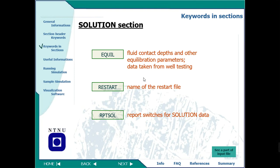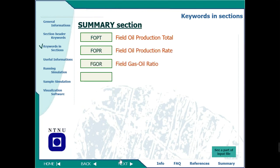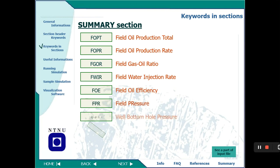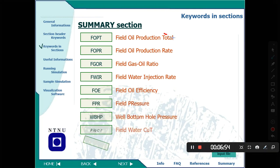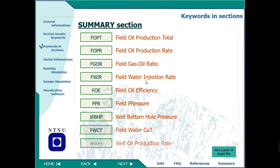The SOLUTION section also contains Eclipse output report settings. Then we have the SUMMARY section, which is very important. Here you specify what results you want output — for example, field oil production total (FOPT), current oil production rate, field gas-oil ratio (FGOR), water injection rate, field pressure, bottom hole pressure, field gas production rate, and field gas production total. All the output keywords are specified here.